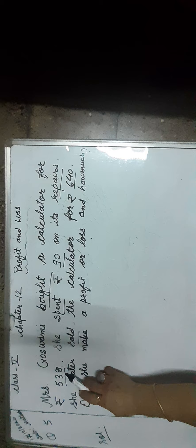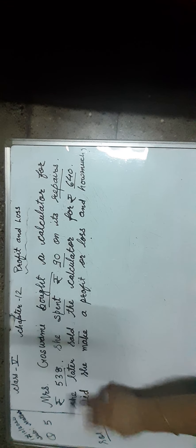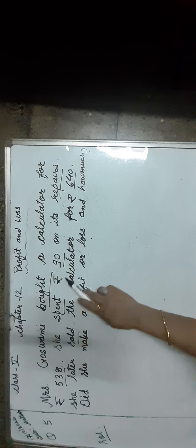So students, can you tell me what price did Mrs. Goswami buy a calculator? Yes, Rs. 538. It means it is the cost price of the calculator. But as you can see, she spent Rs. 90 on its repairs.